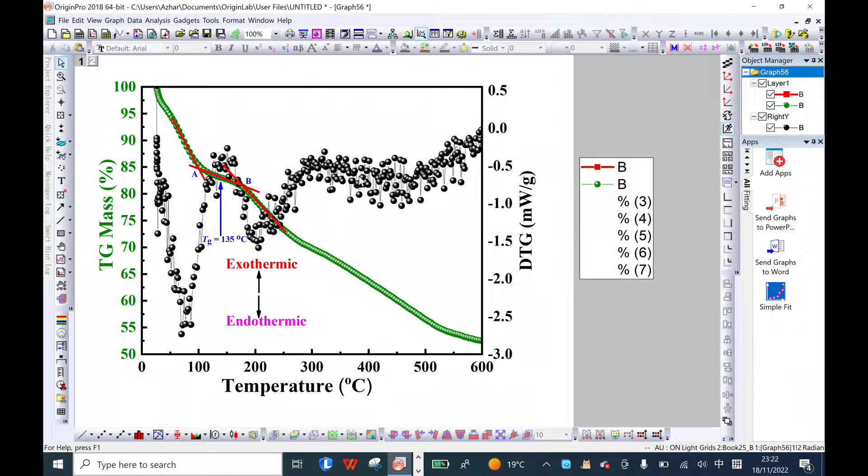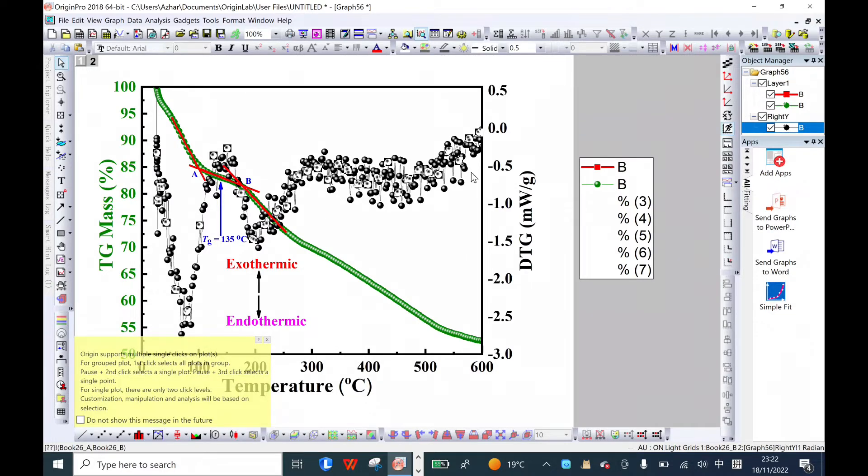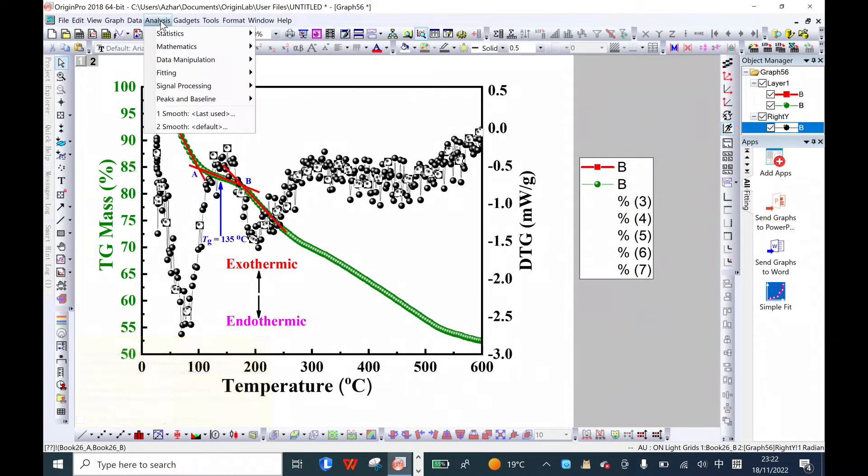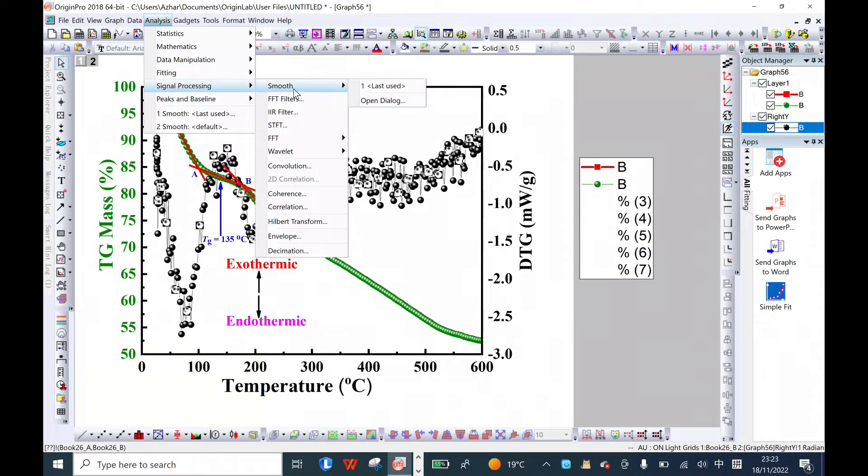We start from here. Click on this curve that is not smooth, go to Analysis, then Signal Processing, then Smooth, and then Open Dialog.